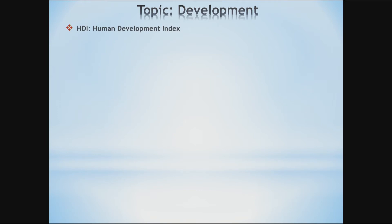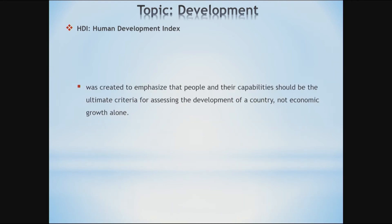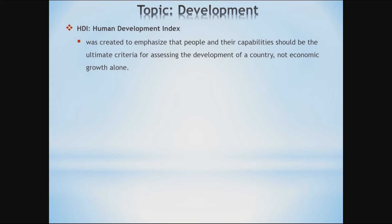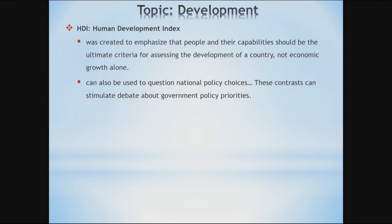Next, HDI. HDI was created to emphasize that people and their capabilities should be the ultimate criteria for assessing the development of a country, and not economic growth alone. HDI can also be used to question national policy choices, asking how two countries with the same level of GNI per capita can end up with different human development outcomes. These contrasts can stimulate debate about government policy priorities.